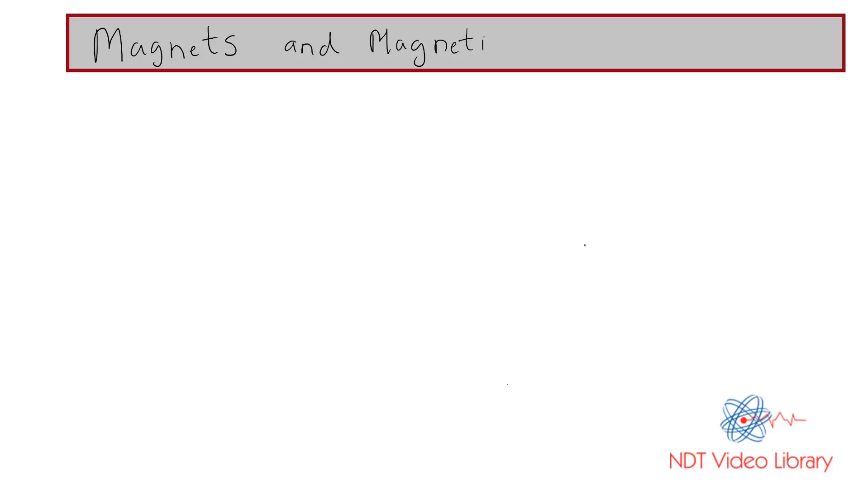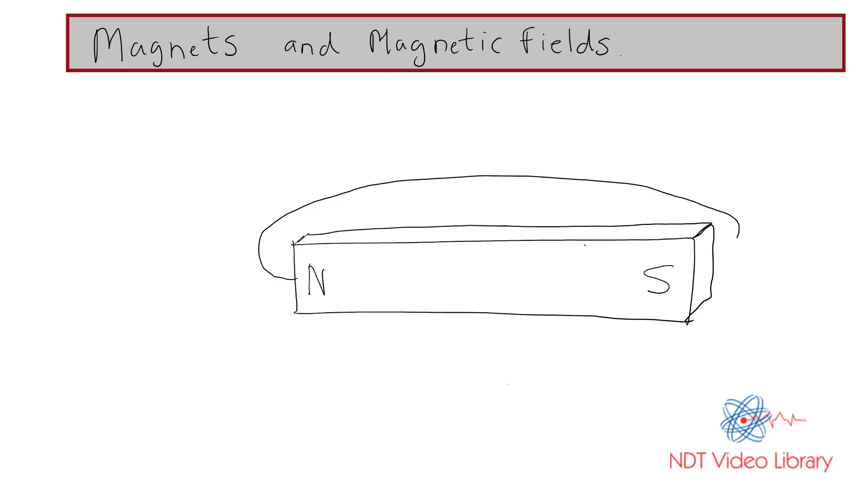Let's look at the theory of magnets and magnetic fields. First, consider a bar magnet, a rectangular magnet with two poles, north and south. The lines of force come out from the north pole and go inside the south pole.